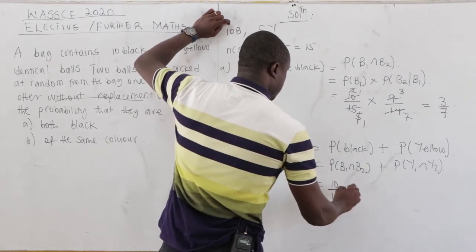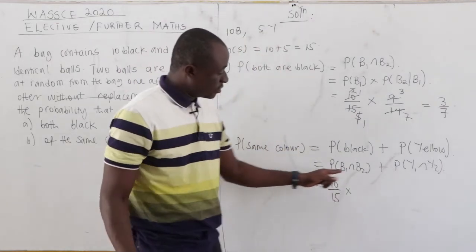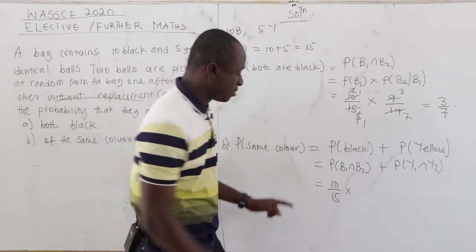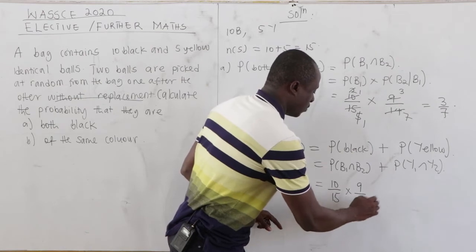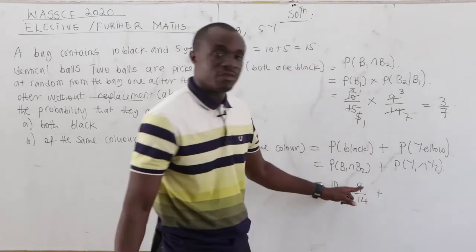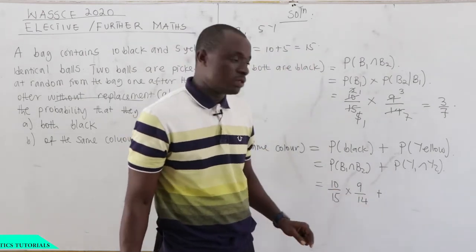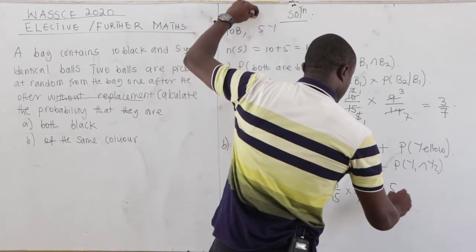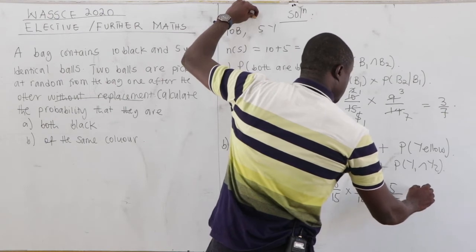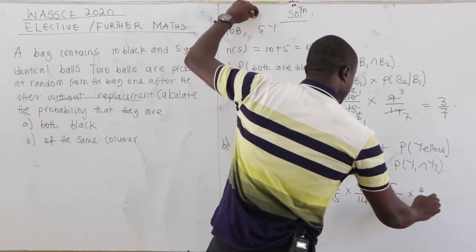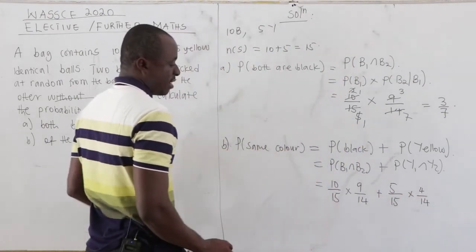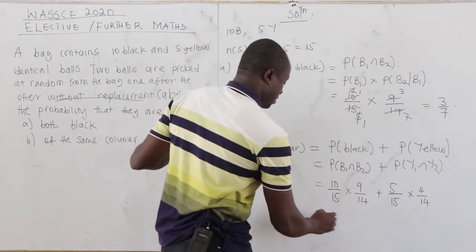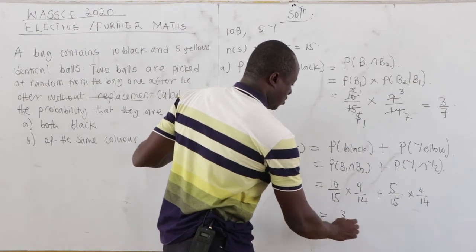For both black: 10/15 times 9/14 = 3/7, which we already calculated. For both yellow: P(Y1) = 5/15, and given the first was yellow, P(Y2 | Y1) = 4/14. Simplifying: 5 into 15 gives 3, 2 into 14 gives 7, so P(both yellow) = 2/21.